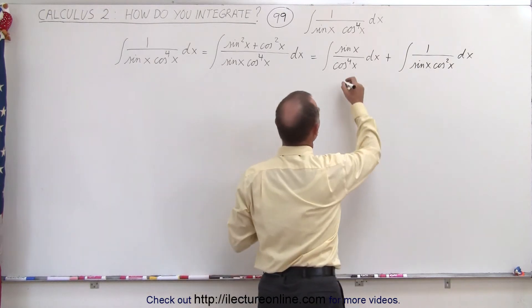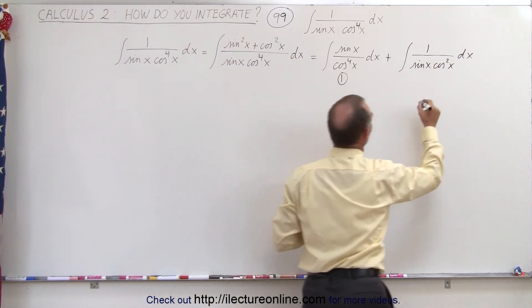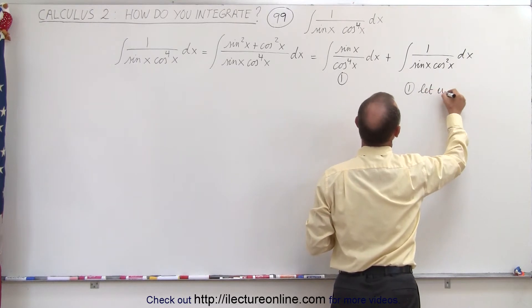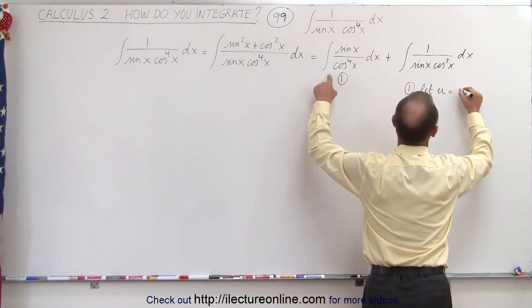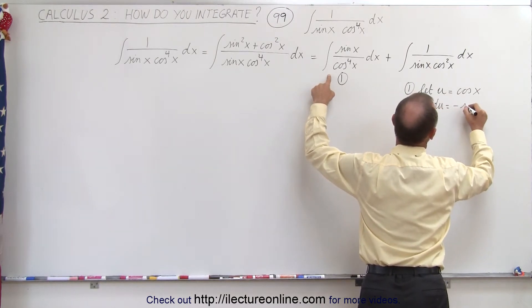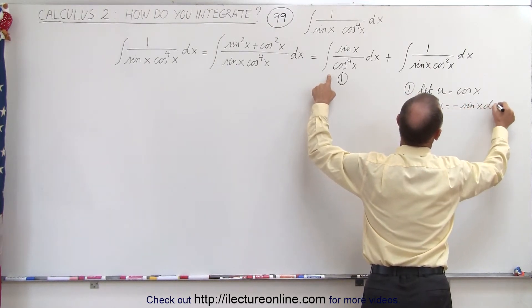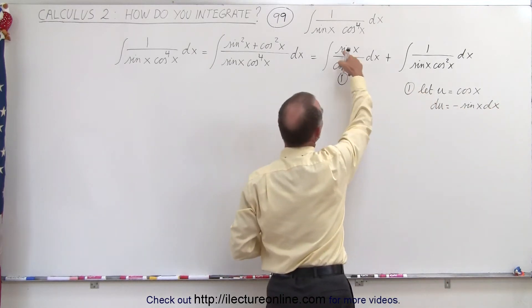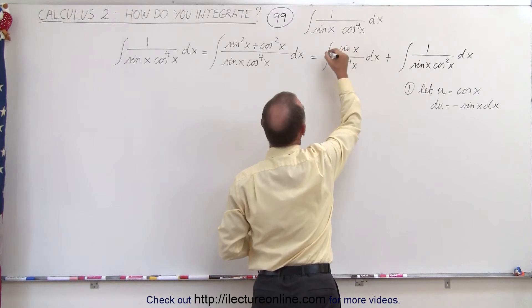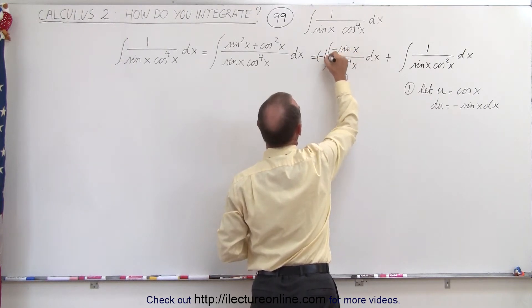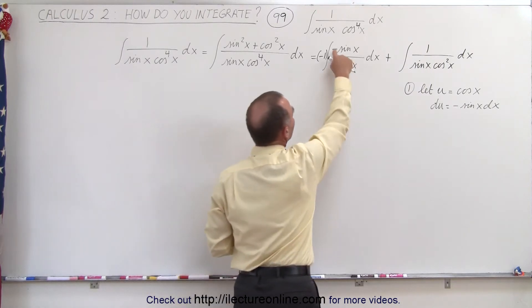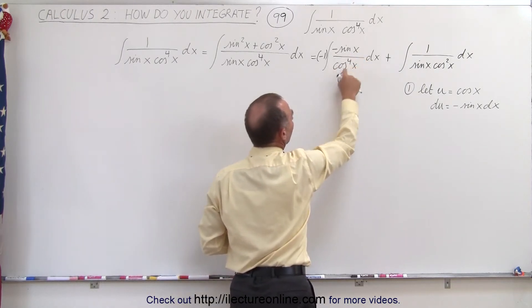The first integral is easily integrated. For number one, we're going to let u equal the cosine of x. That means du is going to be the negative sine of x dx. Notice we have the du in the numerator except for the negative one, so we need a negative in front here and a negative one in front here to compensate for it. So now we have du divided by u to the fourth power.